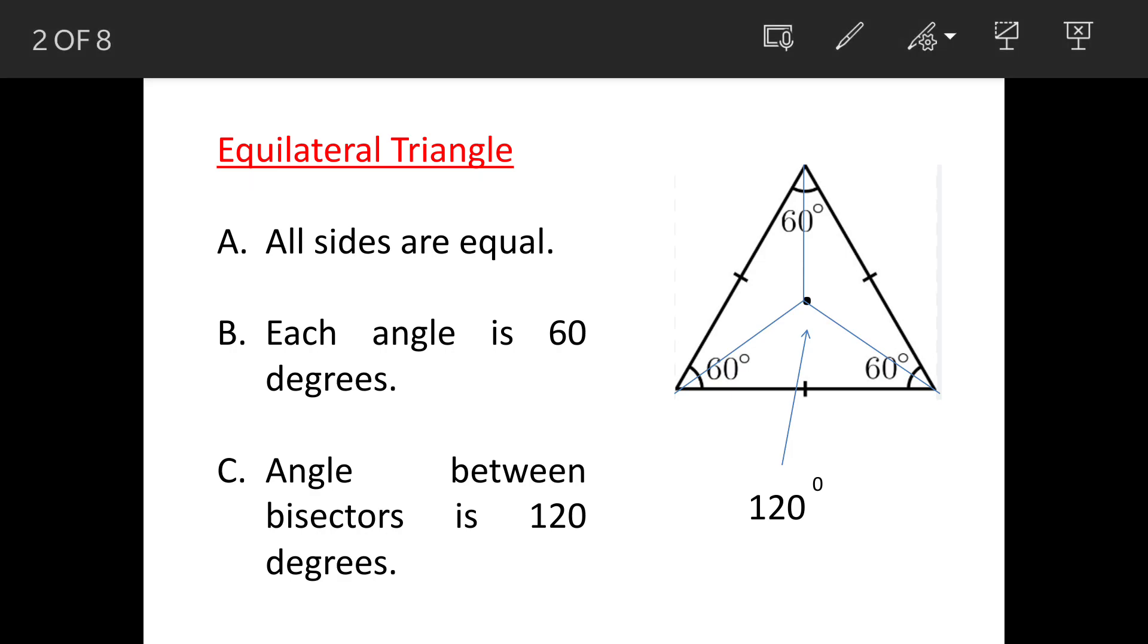For an equilateral triangle, we all know three sides are equal, each angle is 60 degrees, and the angle between bisectors is 120 degrees. Three angles will be 120 times 3, which equals 360 degrees.